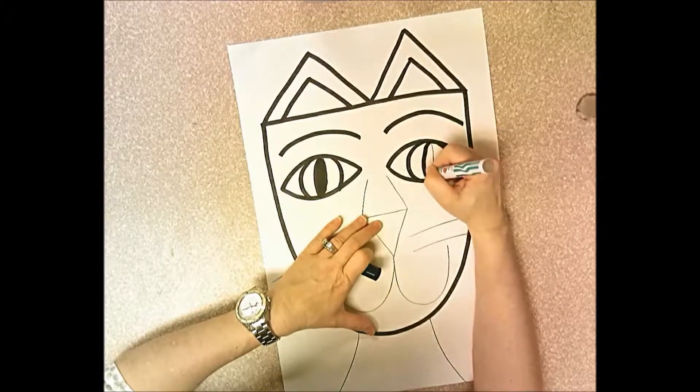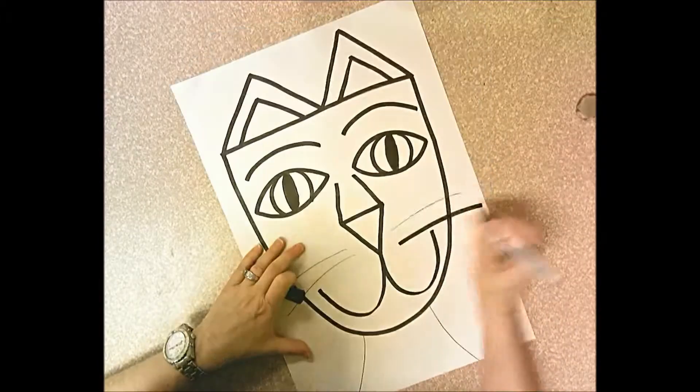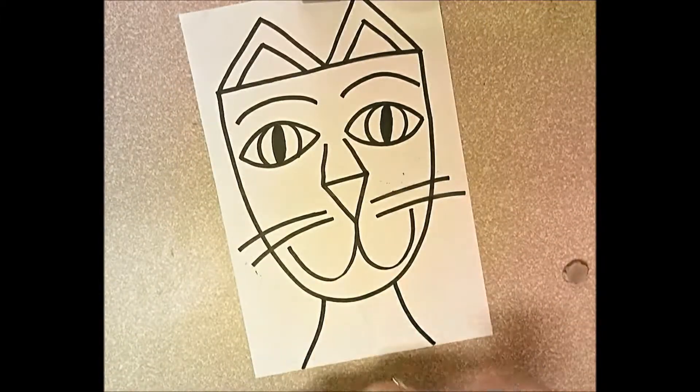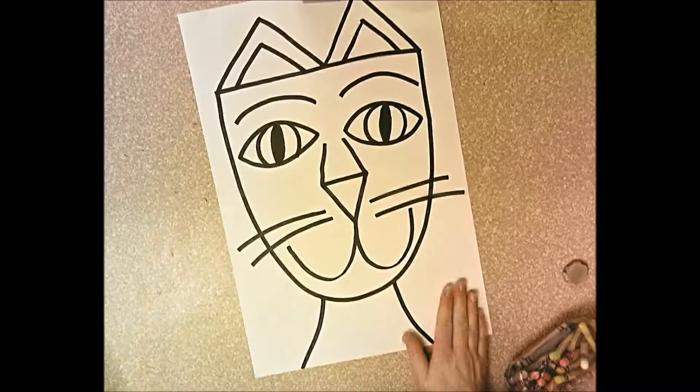You're going to color in the pupils of the cat's eyes with the marker. Now you're going to use expressive colors, not realistic colors, but abstract colors, colors that aren't real.